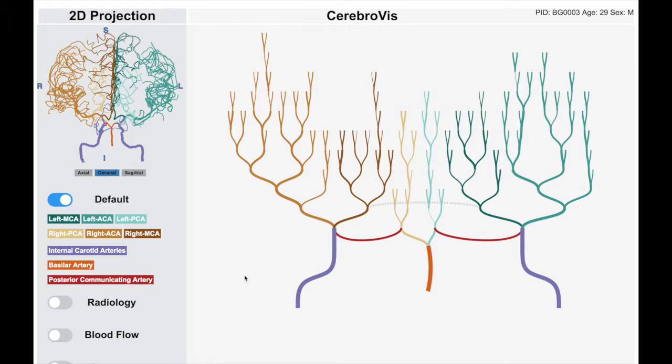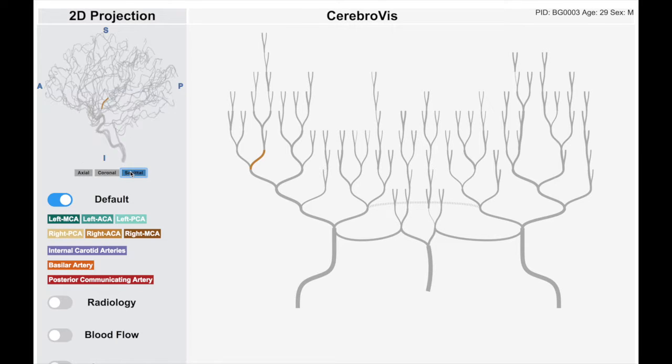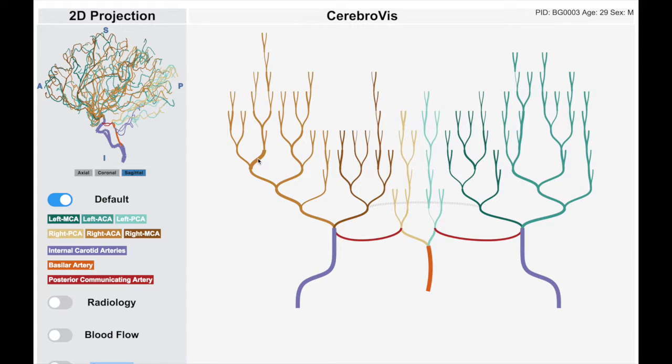The 2D brain projection and Cerebral Vis are linked in our prototype. We identified that the linked views are essential for experts to examine the true geometry of the arteries. Additionally, the linked view can also assist in finding smaller arteries in the human brain.